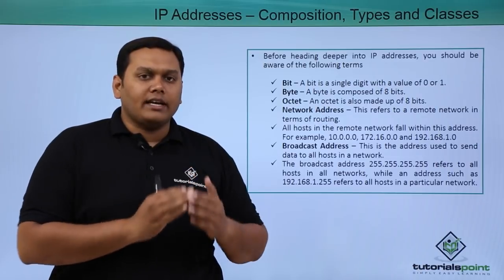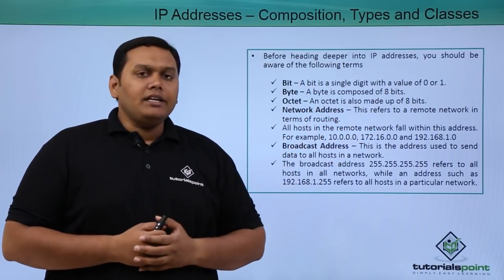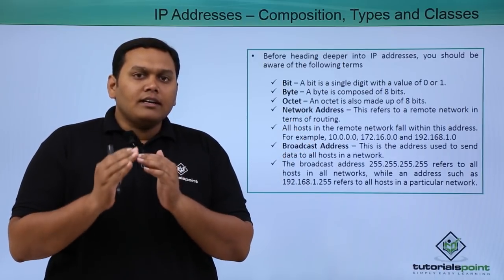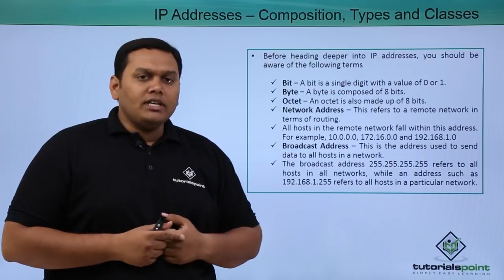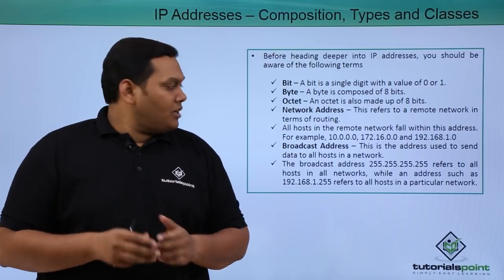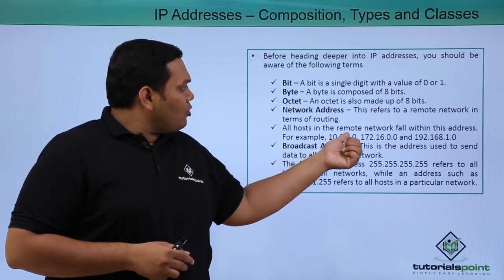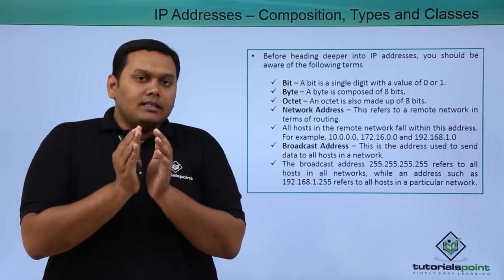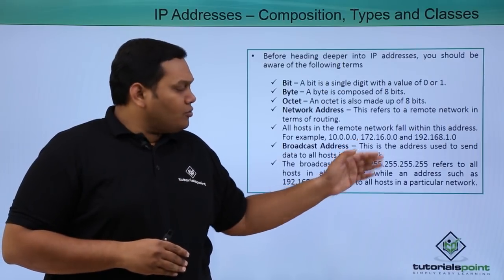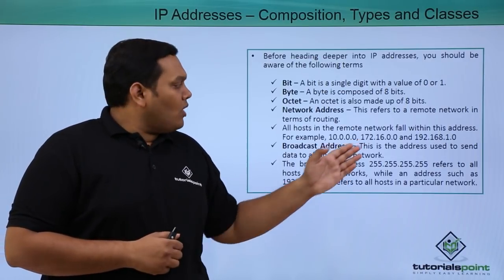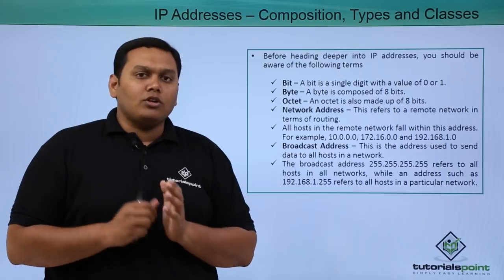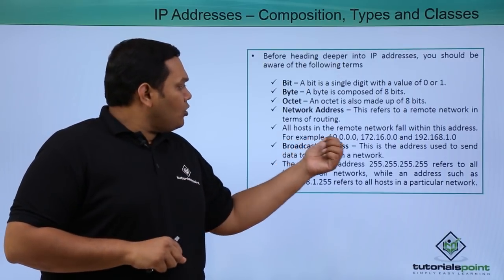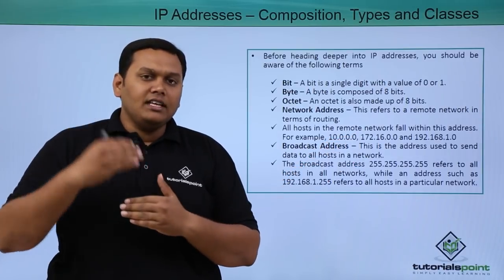What is an octet? An octet is also composed of 8 bits. Coming to network address, this refers to the remote network in terms of routing. You can see examples of all hosts in the remote network fall within these addresses. For example: 10.0.0.0, 172.16.0.0, 192.168.1.0. All hosts in the remote network fall within these addresses.